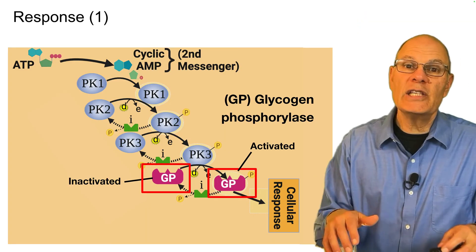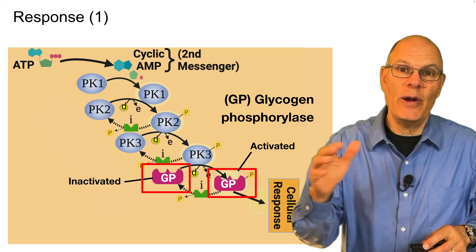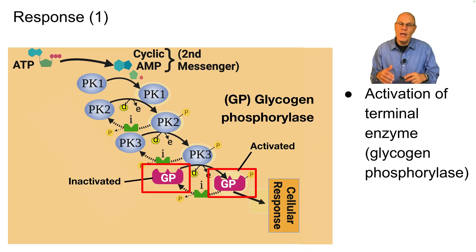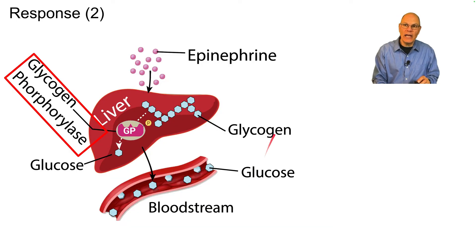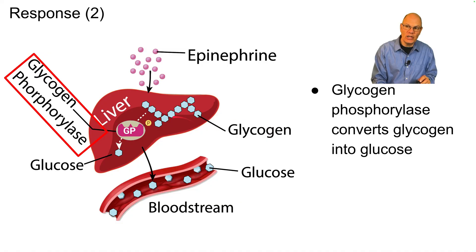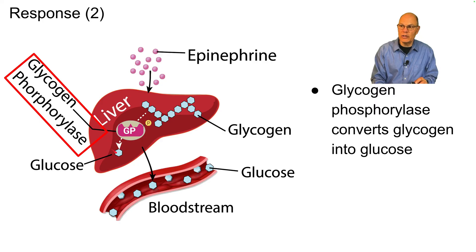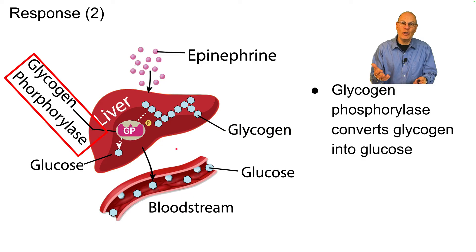In the case of liver cells acted upon by epinephrine, the response is activation of the terminal enzyme, which is glycogen phosphorylase. What glycogen phosphorylase does is convert glycogen — again a polysaccharide — into glucose, a monosaccharide. That glucose diffuses into the blood, giving you energy for the fight or flight response.